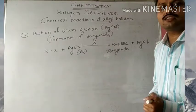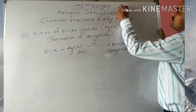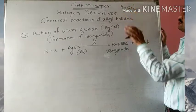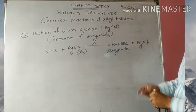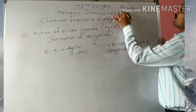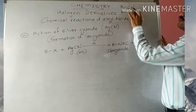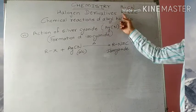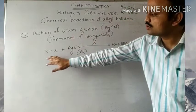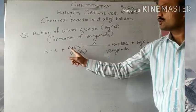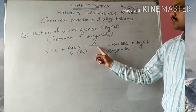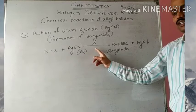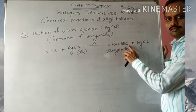Students, there is a difference between cyanide and isocyanide. Cyanide is an alkyl group directly attached to CN from the side of carbon — if an alkyl group is attached to cyanide via carbon, then it is called alkyl cyanide. When the cyanide group is attached via nitrogen, then it is called isocyanide. In short, cyanide is RCN and isocyanide is RNC. The general reaction is: RX, that is alkyl halide, plus silver cyanide in alcoholic condition in presence of heat gives RNC — remember, RNC.